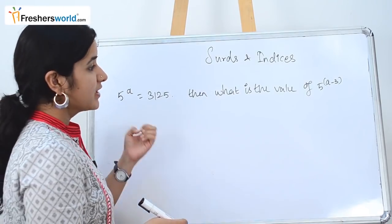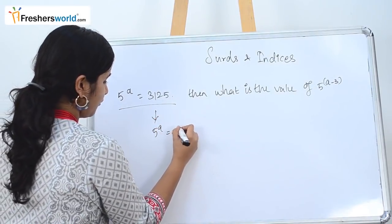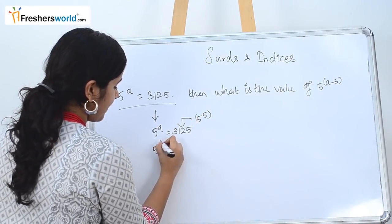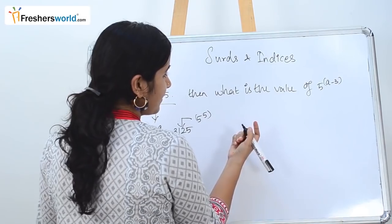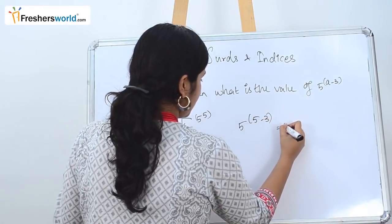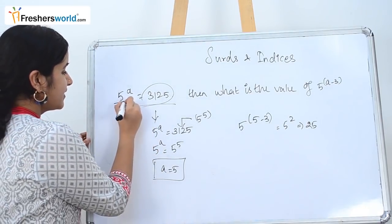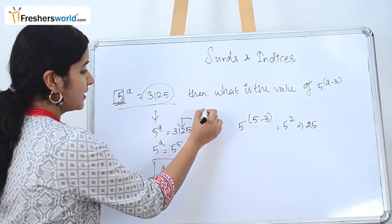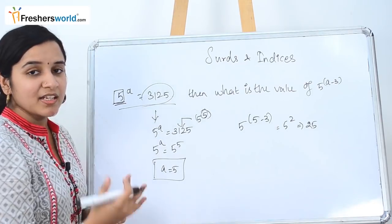The next question is 5 power a is equal to 3125. Then what is the value of 5 power a minus 3? We know that 5 power 5 is nothing but 3125. So 5 power a equals 5 power 5, meaning a equals 5. Now finding 5 power a minus 3: that is 5 power 5 minus 3, which is 5 squared, equals 25. In these kinds of sums, once you find the power of the base, finding the value of the second expression is easy.